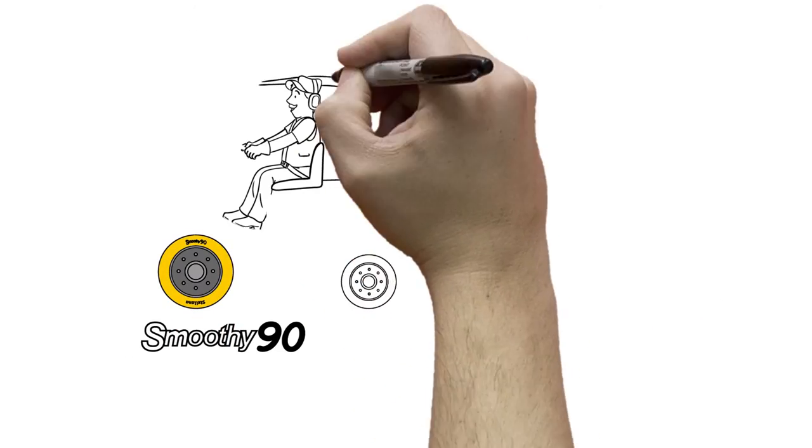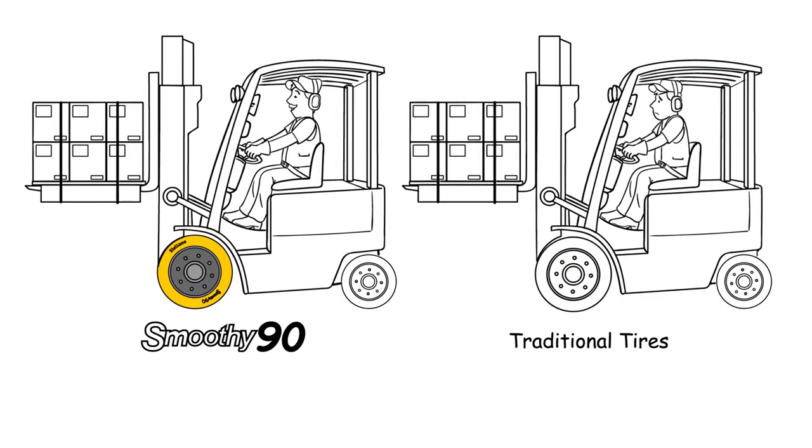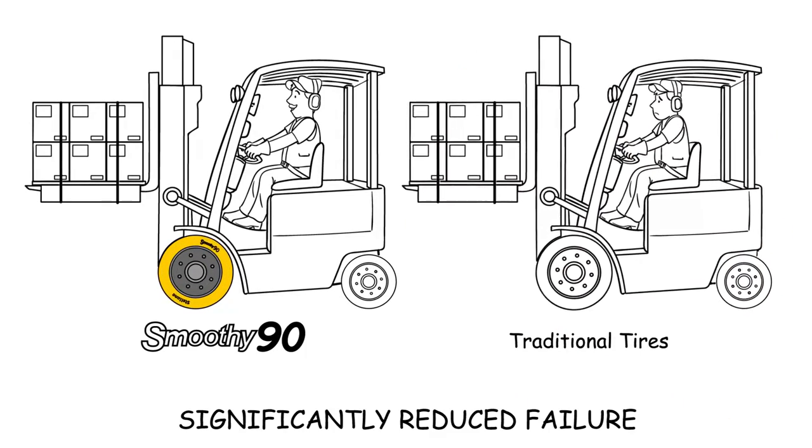Smoothie tires stay perfectly round under larger trucks, heavier loads, and long hours in huge warehouses, which means significantly reduced failure.